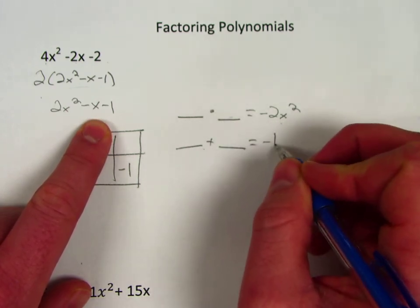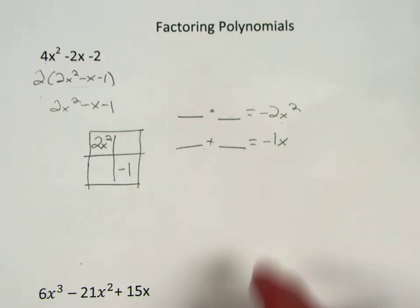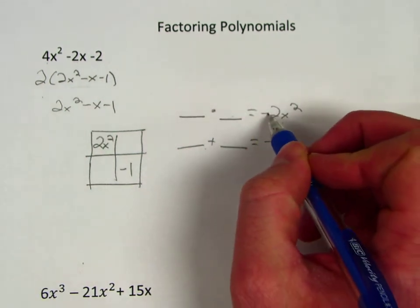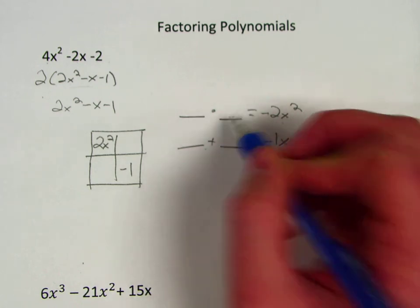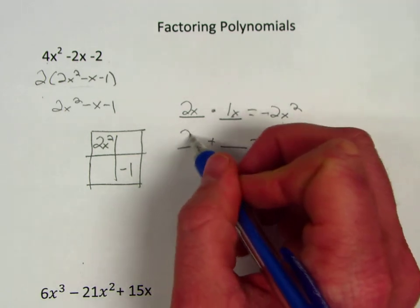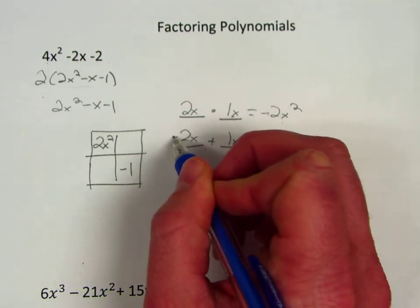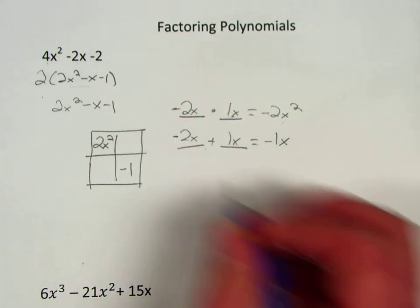And then those same two numbers that multiply to give me that, they need to add to give me this middle term of negative 1x. Hopefully you've had some practice with this. I know that they multiply to get a negative, so I've got one positive and one negative. So the only factors of 2 are 2 and 1, and I know that they add to make a negative 1.